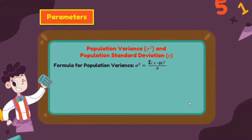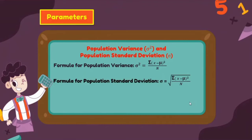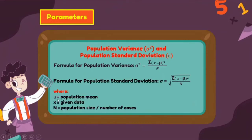These are the formulas for population variance and population standard deviation, where μ is the population mean, x is the given data, and N is the population size.